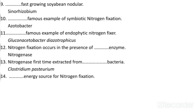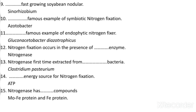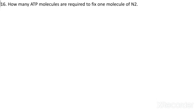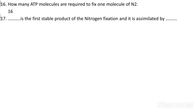Which is the energy source for nitrogen fixation? ATP is the energy source for nitrogen fixation. Nitrogenase has how many components? It has two components: first is the molybdenum-iron protein and second is the iron protein. How many ATP molecules are required to fix one molecule of nitrogen? This question is asked many times in CSIR NET — 16 ATP molecules are required. What is the first stable product of nitrogen fixation and how is it assimilated? The first stable product is ammonia, assimilated by the GS-GOGAT pathway.